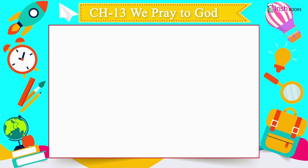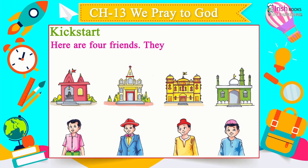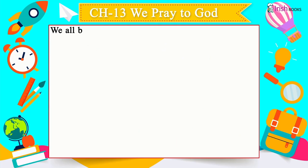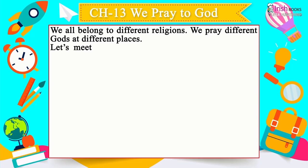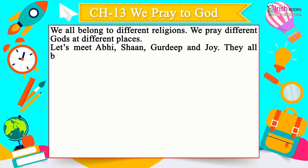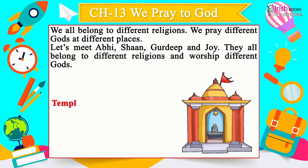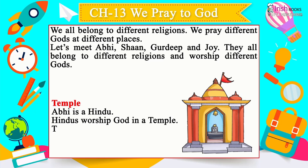Chapter 13: We Pray to God. We all belong to different religions and pray to different gods at different places. Let's meet Abhi, Shan, Gurdeep and Joy — they all belong to different religions and worship different gods. Temple: Abhi is a Hindu — Hindus worship God in a temple and call him Bhagawan. Their holy book is the Bhagavad Gita.